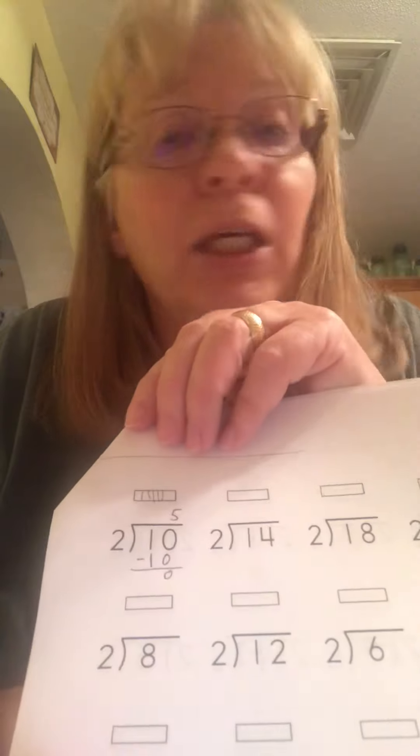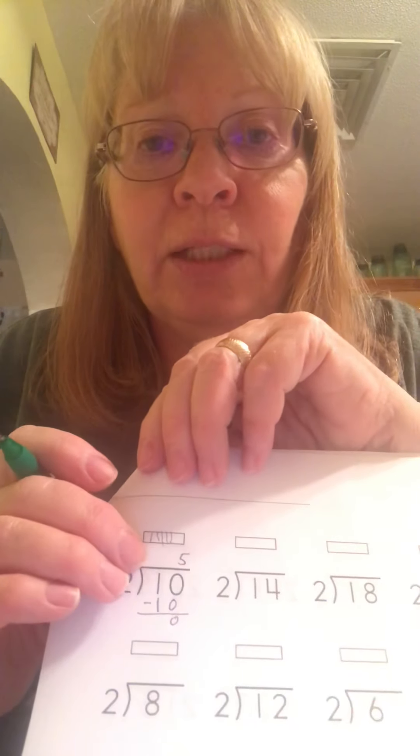So I have 1, 2, 3, 4, 5 marks. And that 5 goes above the 0 because it goes in the 1's place. And underneath the 10, I'm going to write 10, and I'm going to subtract and get 0. So that means there's no more that can go into that number.